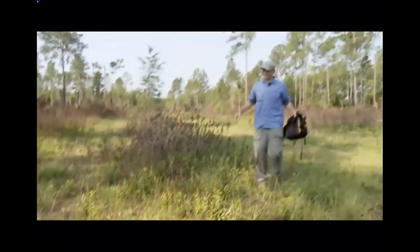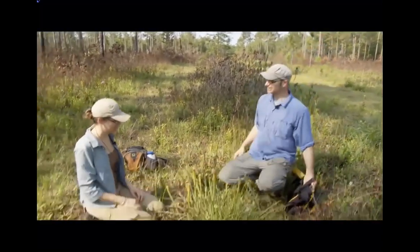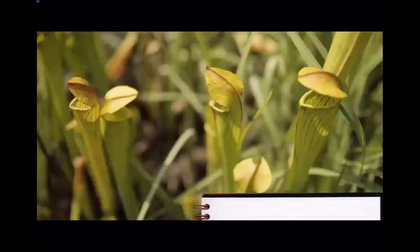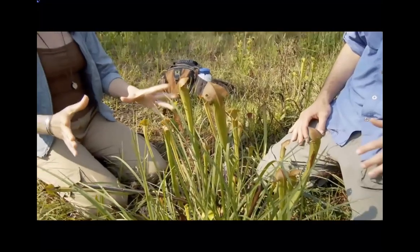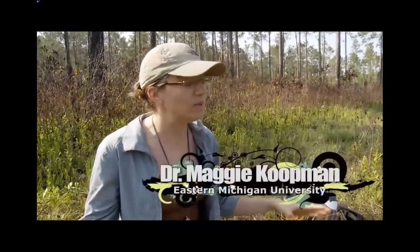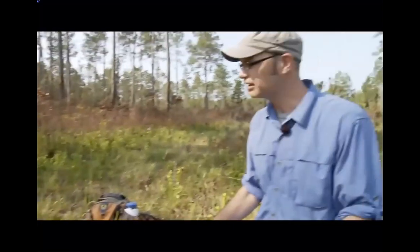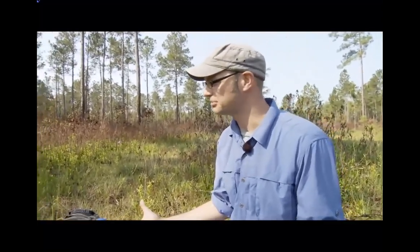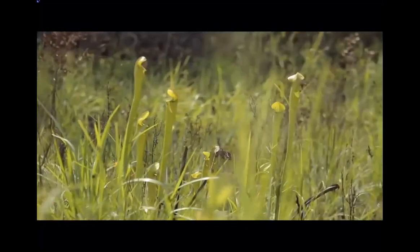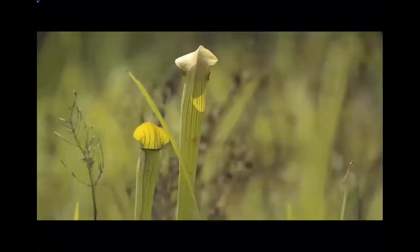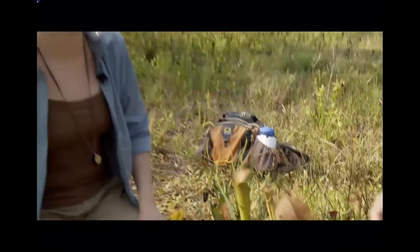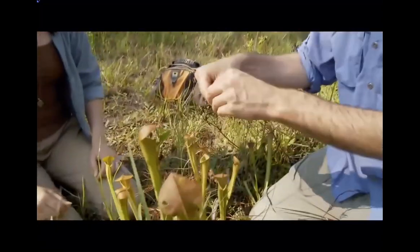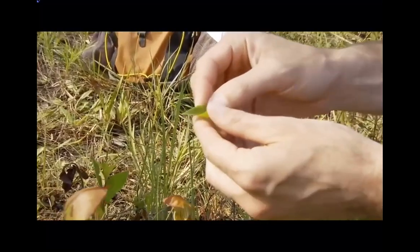Chris meets Maggie in the field examining Sarracenia alata — a carnivorous plant living in very nutrient-poor soil. It needs supplemental nutrients not available from the soil, so it captures organisms, primarily insects. The leaf is modified to attract, trap, and digest animals. As Maggie explains: if you were to take a normal leaf and curl it up, you could make it into an insect trap — and that is essentially what has happened over evolutionary time.